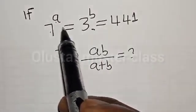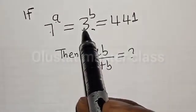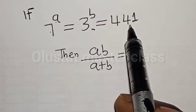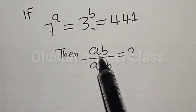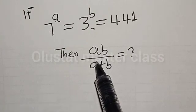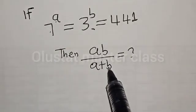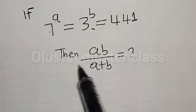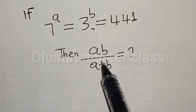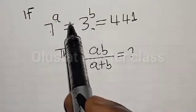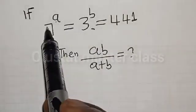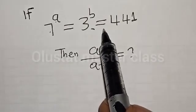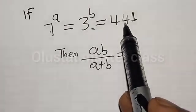If 7 raised to power A is equal to 3 raised to power B, which is equal to 441, then what is the value of AB divided by A plus B? Hi everyone, welcome to my class. In this class, we want to find the value of AB divided by A plus B, from this given exponential equation: 7 raised to power A is equal to 3 raised to power B, which is equal to 441.